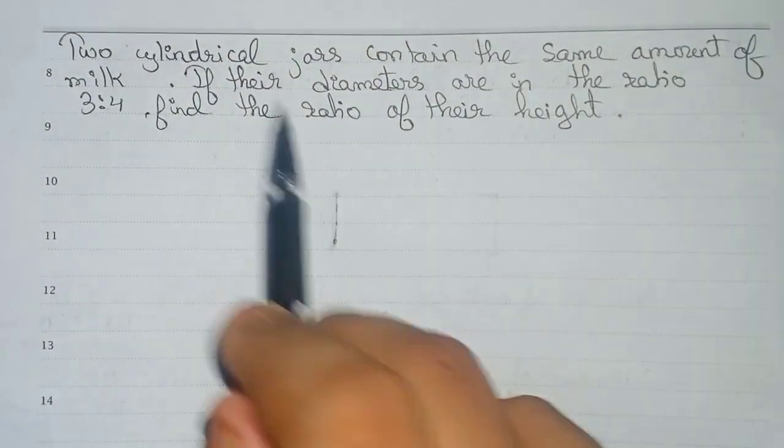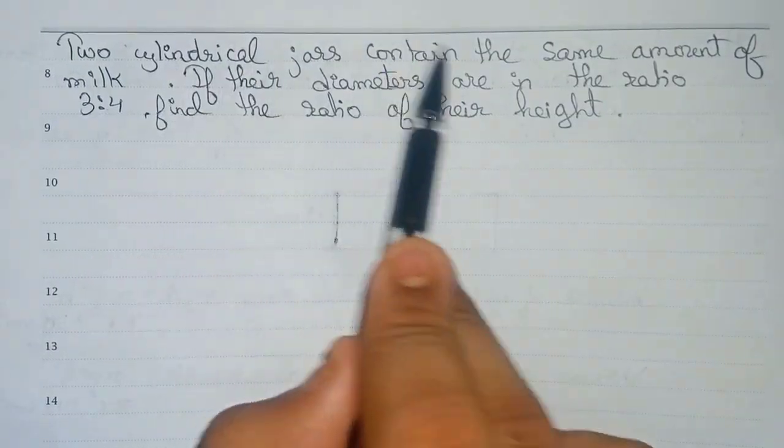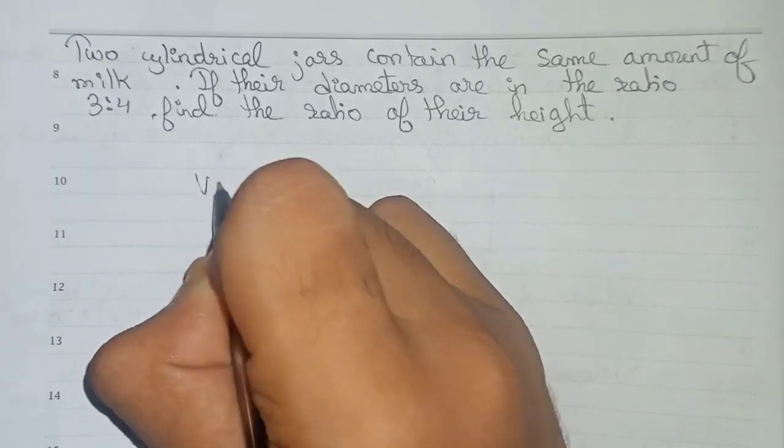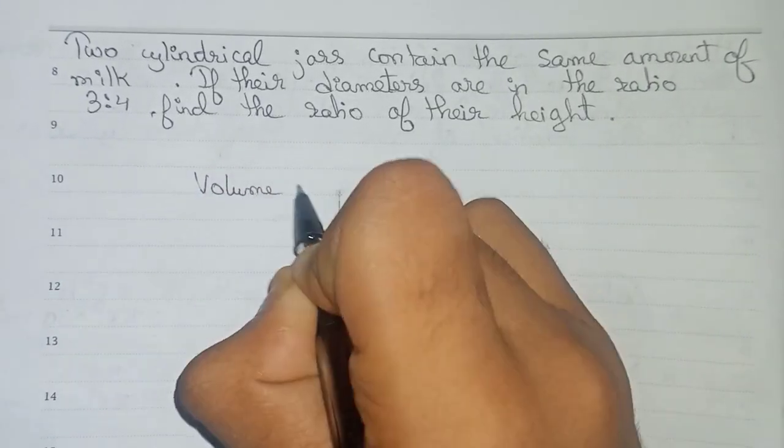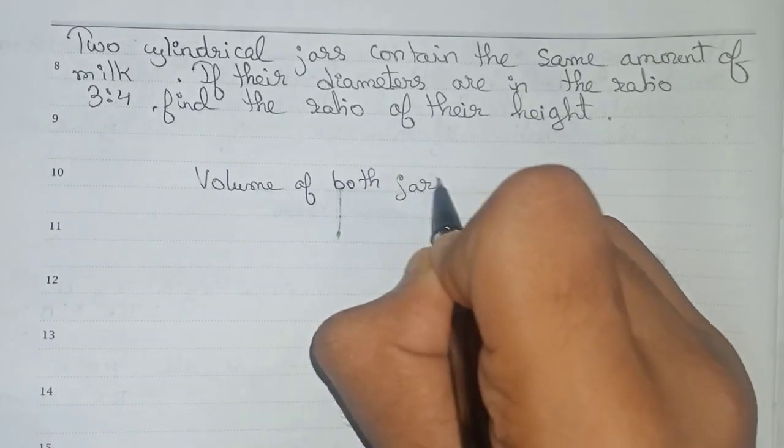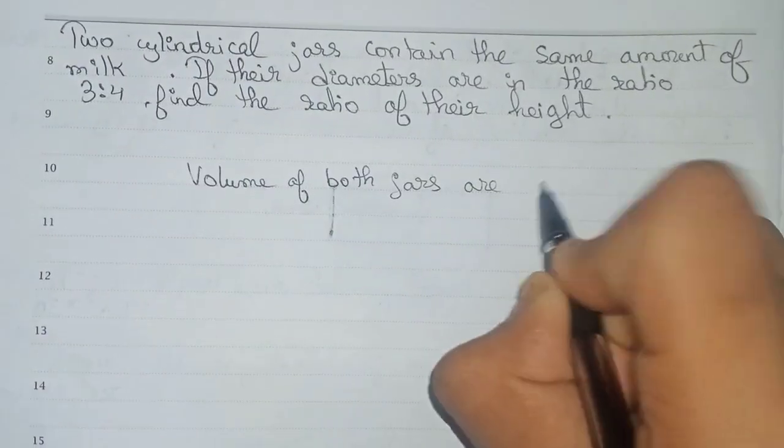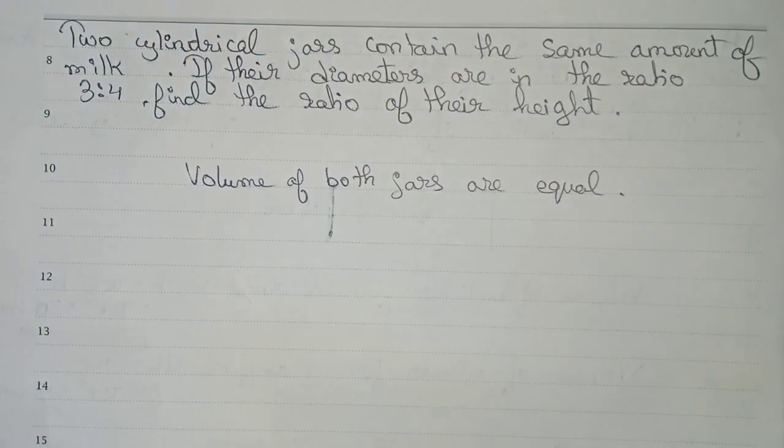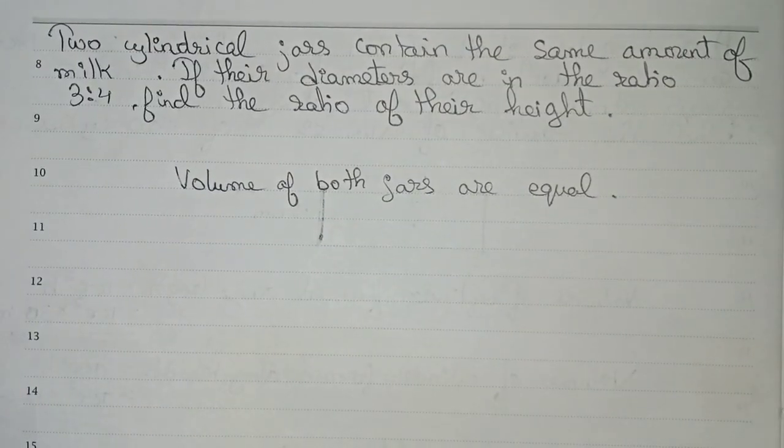First, it is mentioned in the question that we have the same amount of milk. If they are containing the same amount of milk, that means we can say that their volumes are equal. Volume of both jars are equal. We can conclude this from here as they contain the same amount of milk.